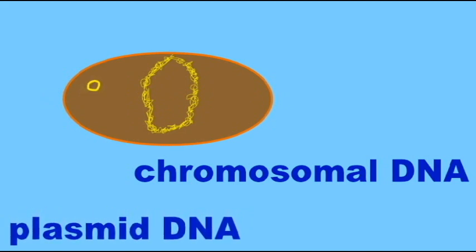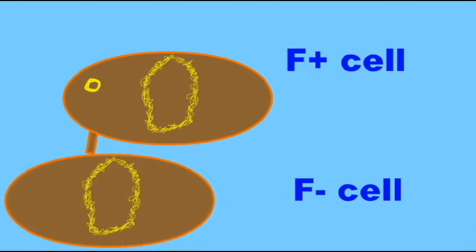One plasmid is known as the F-plasmid, and cells which possess the F-plasmid are termed F+.